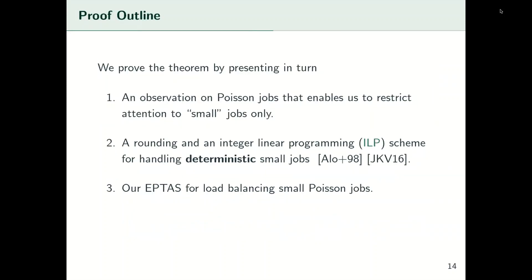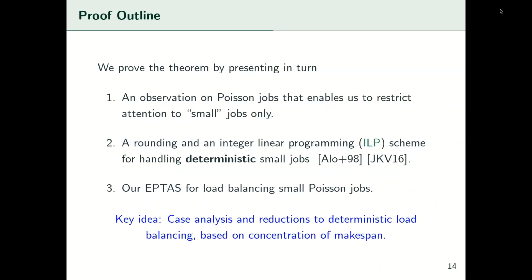Here is the proof outline. To prove our main theorem, we will first make an observation on Poisson jobs that will enable us to restrict attention to small jobs only — by small jobs we mean their means are small. Then we will recap a rounding and an integer linear programming scheme for handling deterministic small jobs used in previous works. Finally, we present our efficient PTAS for load balancing small Poisson jobs and analyze its performance. The key idea is to do case analysis on the input instance and give reductions to deterministic load balancing with different objective functions, arguing correctness by showing concentration results of the makespan.